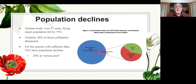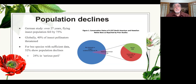Bees are declining worldwide, which is a real serious problem. Europeans are documenting more of this than we are in the United States, although we've documented it as well. Honeybees are declining, native bees are declining, and insects in general are declining, and there are a number of reasons for this — but we don't know all of them. It isn't just in temperate regions; tropical regions also are showing declines in pollinators. There are some things you can do, and we'll talk about that with the next few slides.